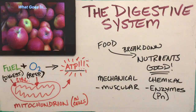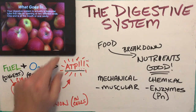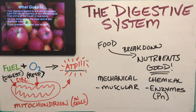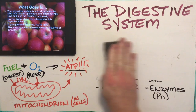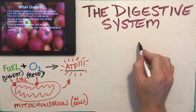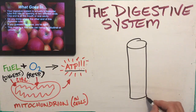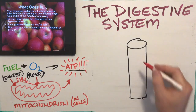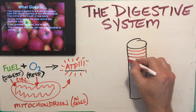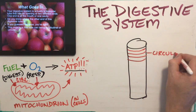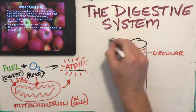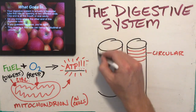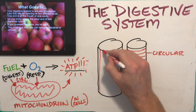The digestive system overall is a muscular tube with two openings — one at the oral cavity and one at the anus. The muscle in this tube can be longitudinal or circular. Circular muscle wraps in bands around the tube, while longitudinal muscle runs down the entire length of the tube.